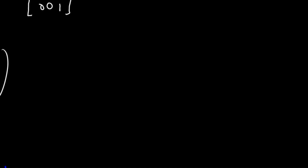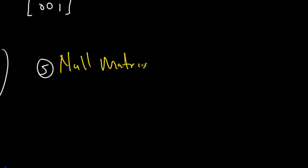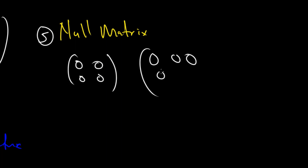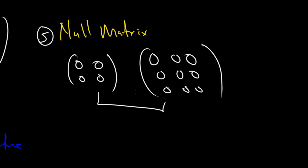Lastly, we look at the null matrix, which is not a sub-type of square matrix but stands on its own. Whenever all the elements in a matrix are zero, such a matrix is called a null matrix. This applies whether it is a 2 by 2, 3 by 3, 4 by 4, or 5 by 5 matrix — as long as all elements equal zero, it is a null matrix.